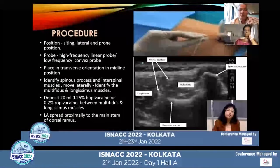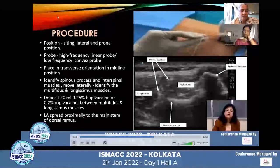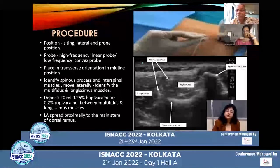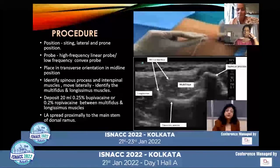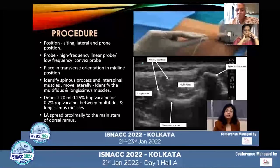For performing the TLIP block, the probe is placed in transverse orientation in the midline position to identify the spinous process and the interspinal muscles, and then moved laterally to identify the multifidus and longissimus muscles. The local anesthetic is deposited between these two muscles, and spreads proximally to the main stem of the dorsal ramus.